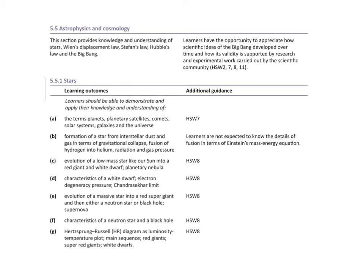Hi everyone, today we're going to be learning about astrophysics. It's chapter 19 of OCR called STARS and we will be looking at the astrophysics side first. We're going to start with some specific key terms that you need to know like planets, planetary satellites, comets, solar system, galaxies and the universe.